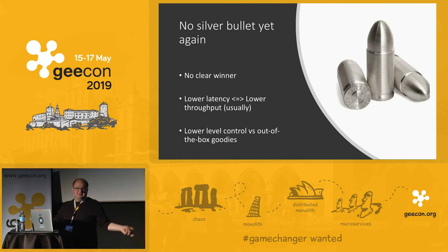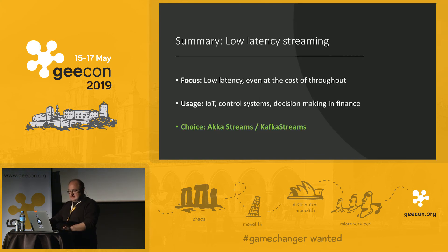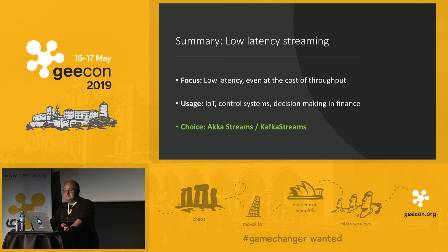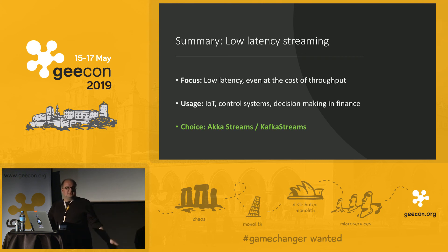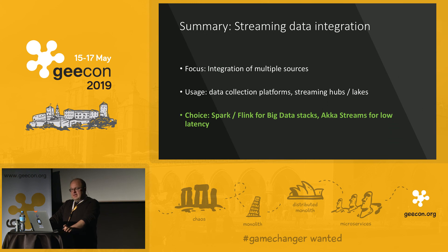Going back to business use cases: for low-latency streaming — controlling IoT devices, quick IoT analytics, fast finance and trading decisions — your focus needs to be on very low latency even if throughput isn't huge, since records arrive quickly but individually. My choice here would be either Akka Streams or Kafka Streams. For IoT I'd lean towards Akka Streams, given it can easily integrate with things like MQTT or directly over TCP to connect to those devices.